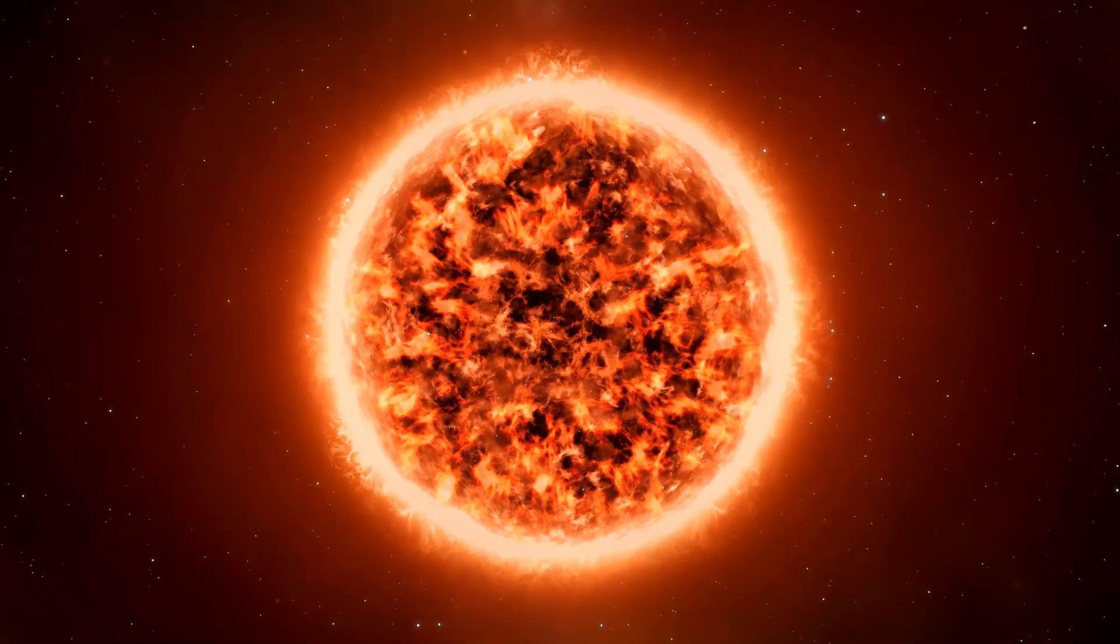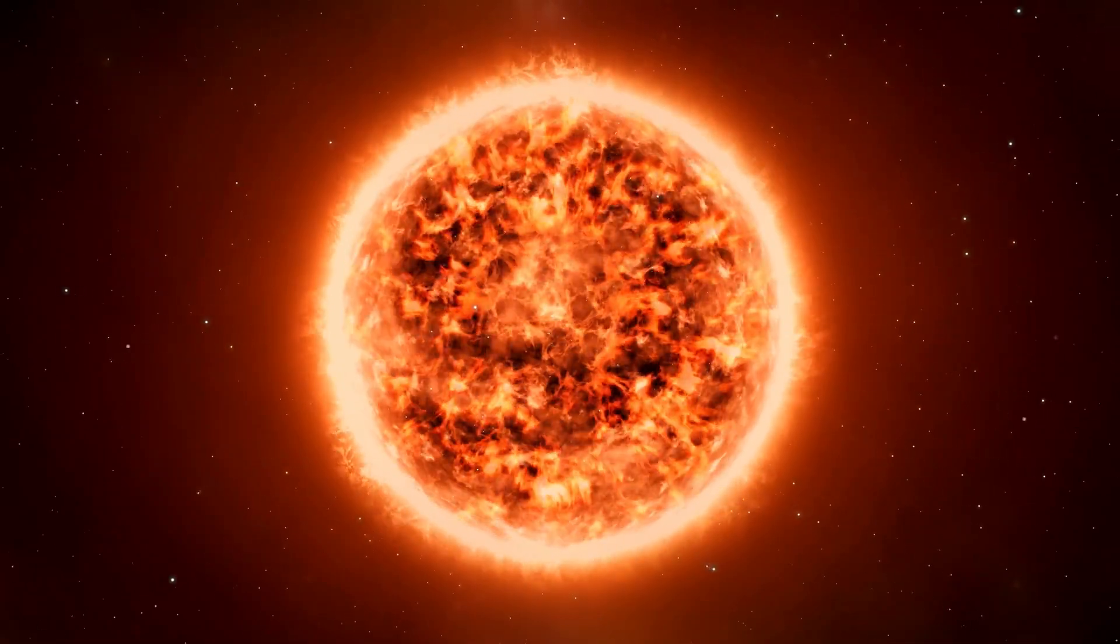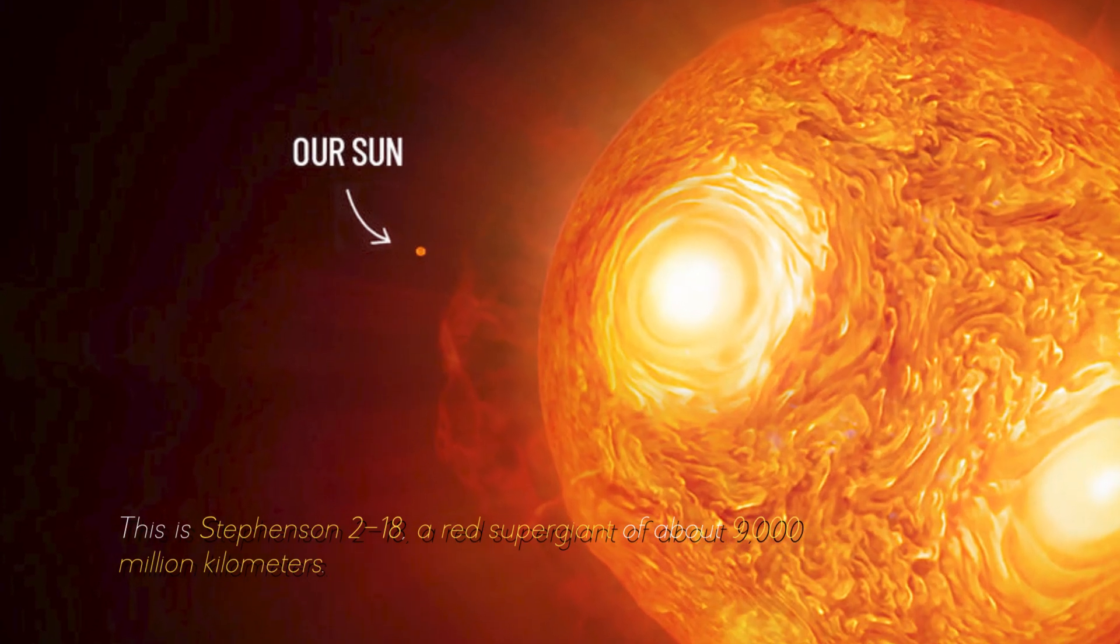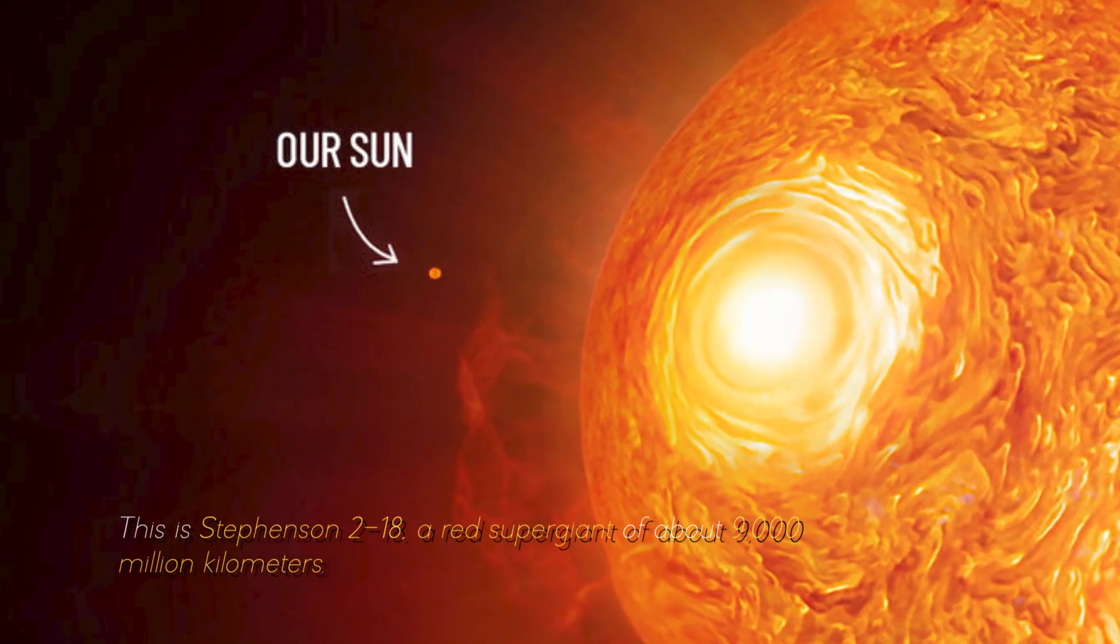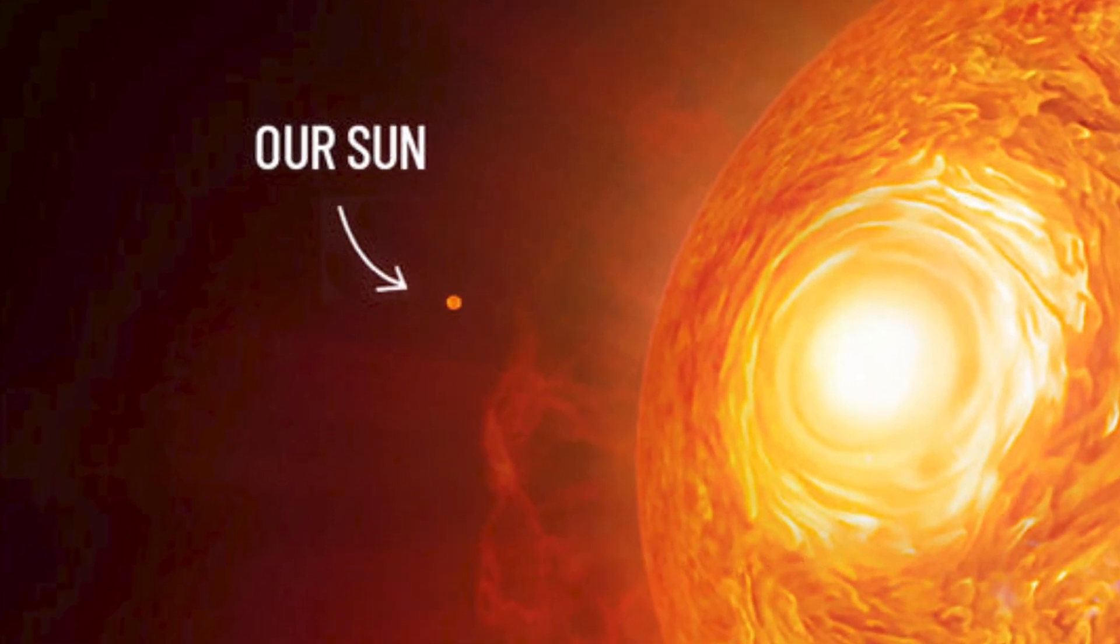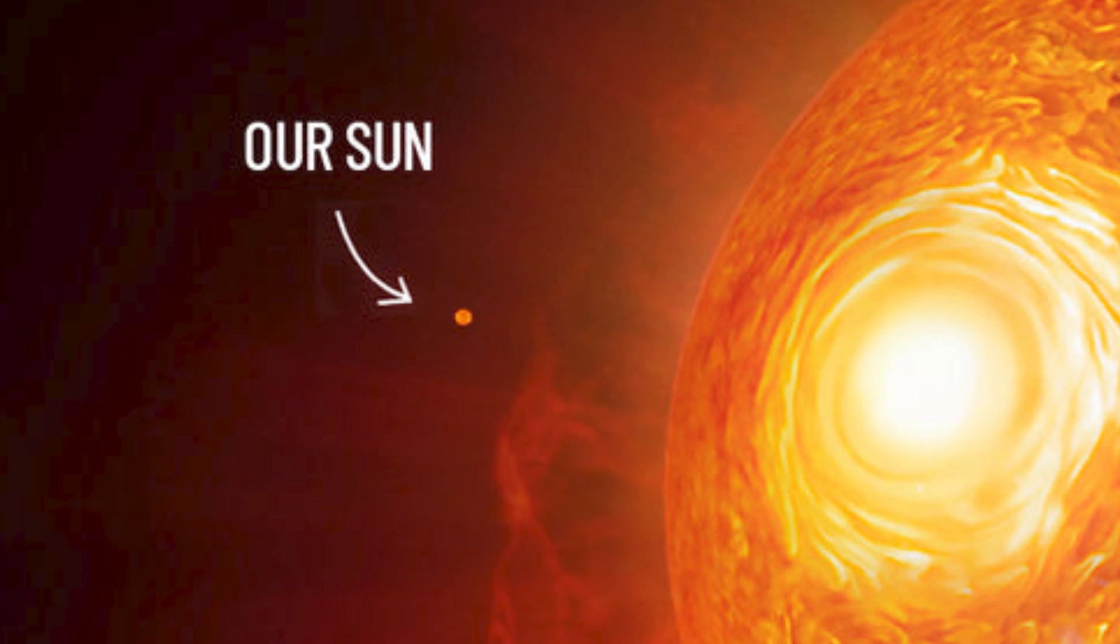Even our sun would also look small if we compare it with the largest star in the universe. This is Stevenson 218, a red supergiant of about 9,000 million kilometers, which looks like this in front of our star, something really spectacular.